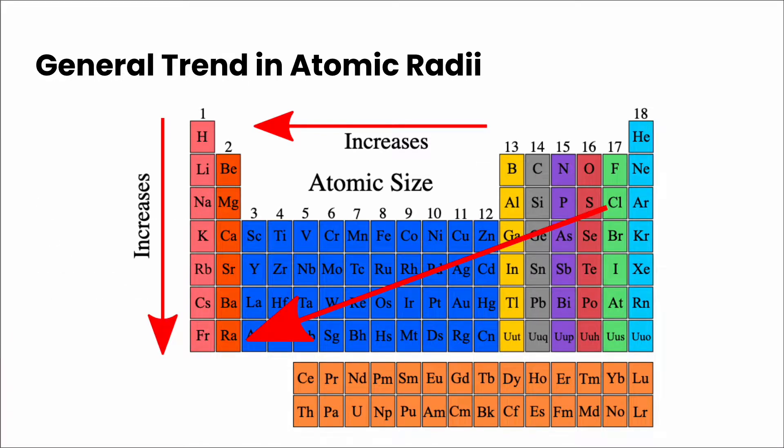Now if we take a look at the trends in atomic radius across the periodic table, if we first take a look across a period, then it increases from right to left or it decreases from left to right. And then atomic radius increases as we go down a group in the periodic table.